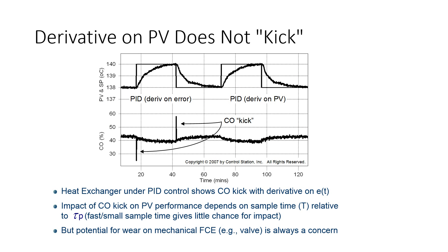With derivative on error, each set point change causes a derivative kick — the controller sees a sudden large error change. When using derivative on PV instead, there is no kick at those points, and the control response is nearly identical. The kick doesn't affect operations dramatically since it only lasts one cycle, but eliminating it is beneficial — you don't want a valve opening and shutting very rapidly if you can avoid it.